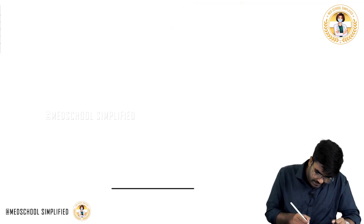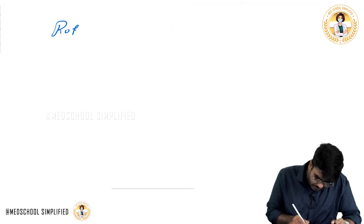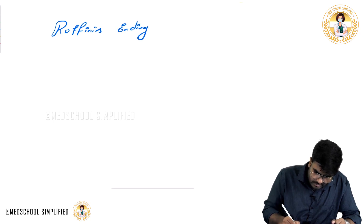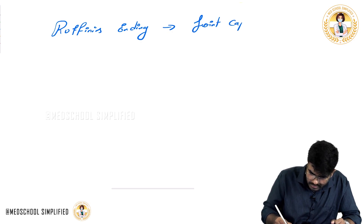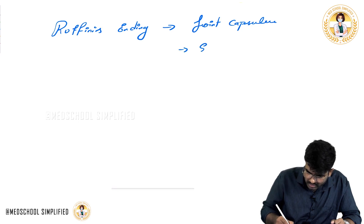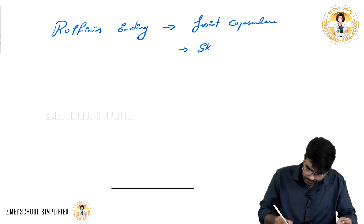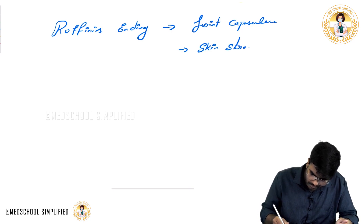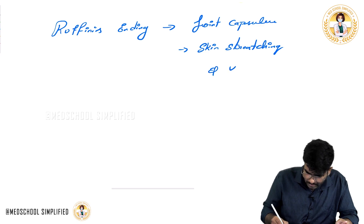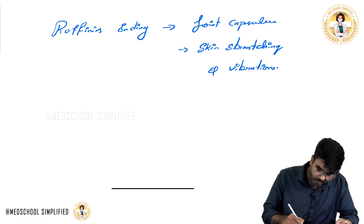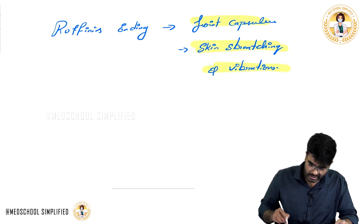The last type of touch receptor is Ruffini's endings. They are present in joint capsules and they are going to respond to skin stretching and vibrations.